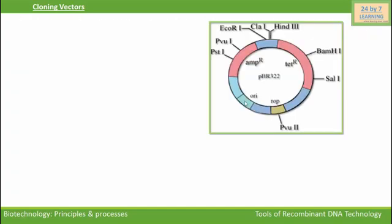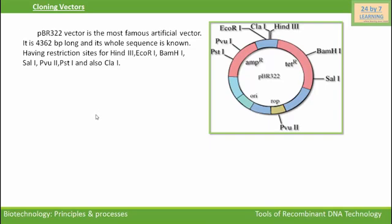This is the picture of the pBR322 vector. It is the most famous artificial vector and it is 4362 base pairs long, with its whole sequence known. It has restriction sites for HindIII, ClaI, EcoRI, BamHI, SalI, PvuI, PvuII, and PstI.